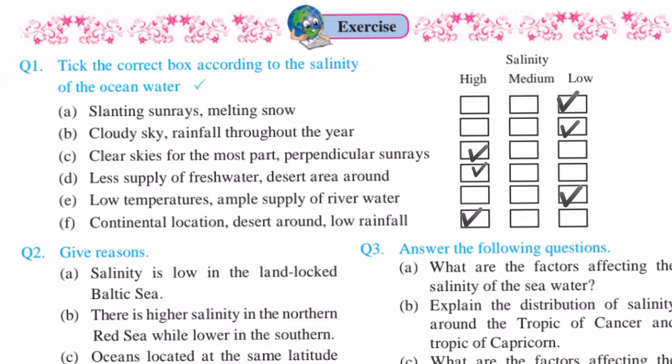A) Slanting sun rays, melting snow — answer is low. B) Cloudy sky, rainfall throughout the year — answer is low. C) Clear skies for the most part, perpendicular sun rays — answer is high. D) Less supply of freshwater, desert area around — answer is high.